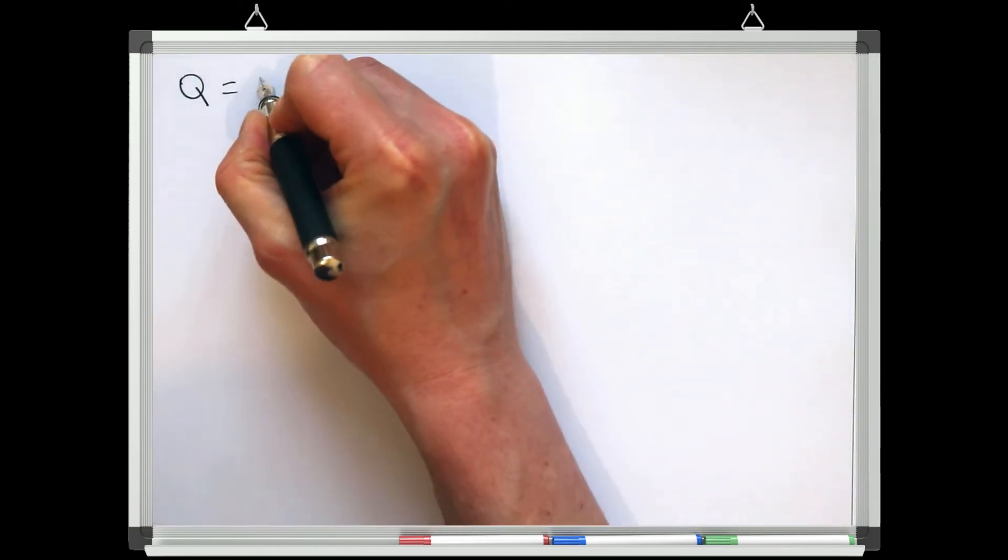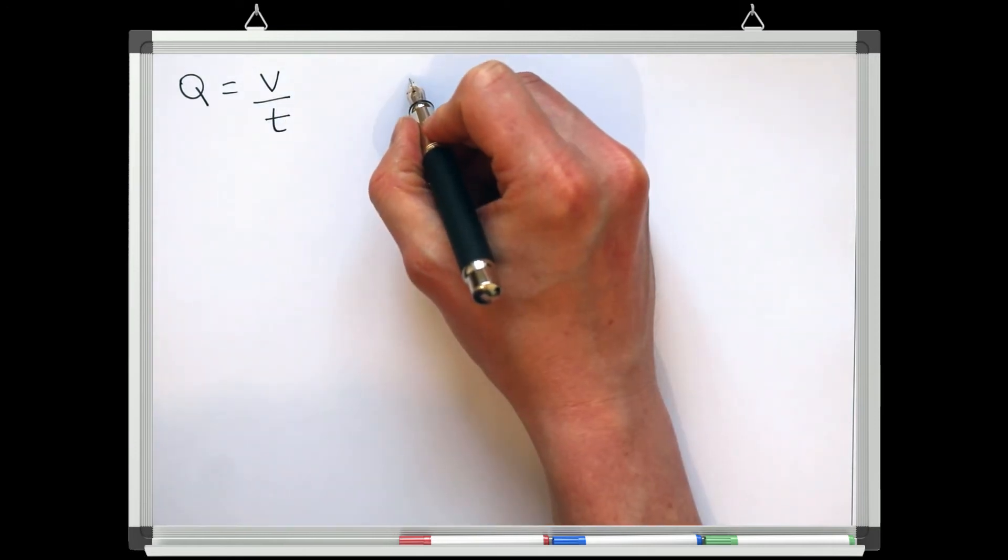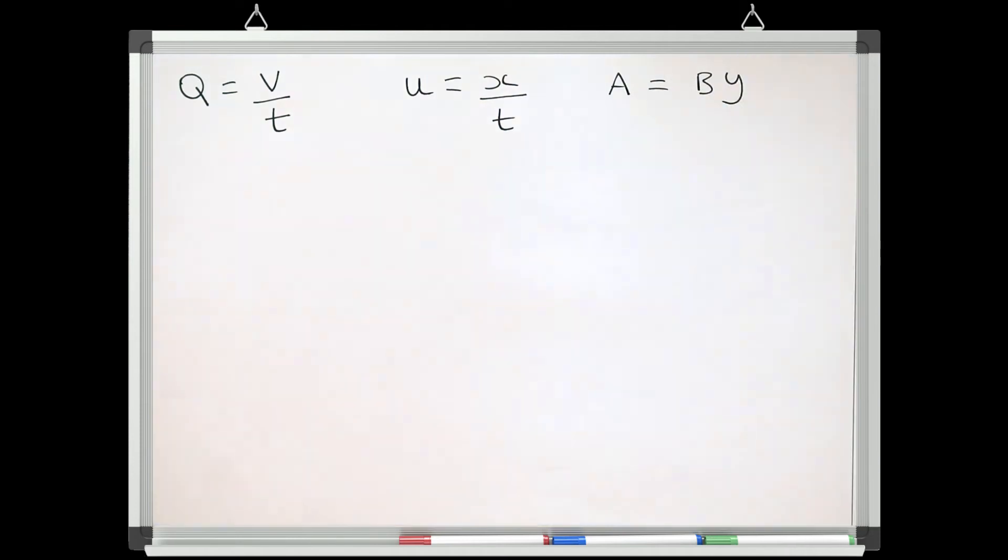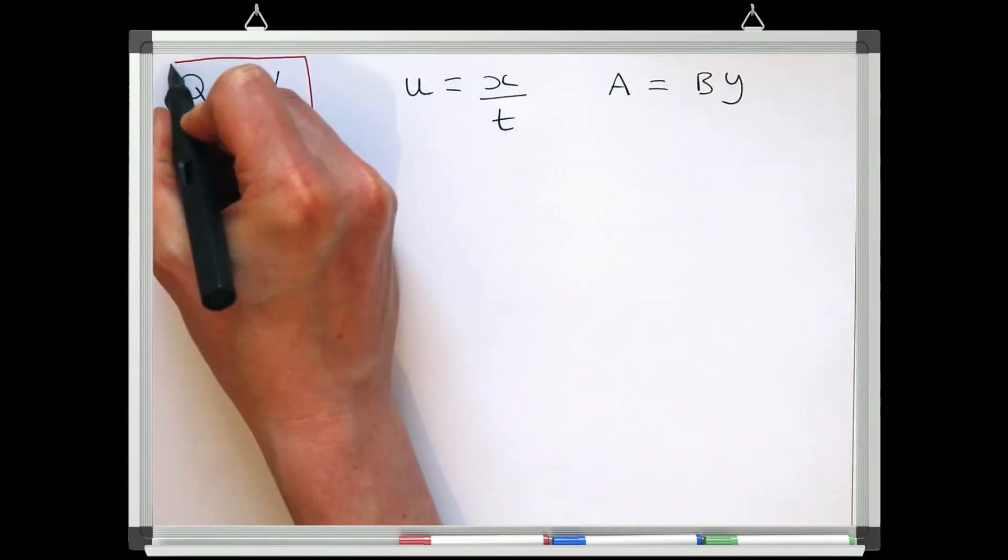We know that discharge is volume passing through a system in a given time, velocity is distance travelled in x over time, and area is the width of the channel times by the flow depth.